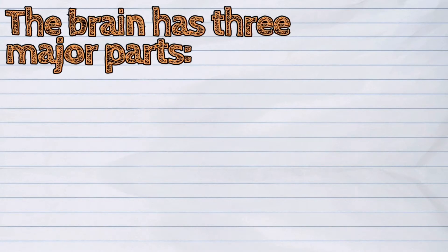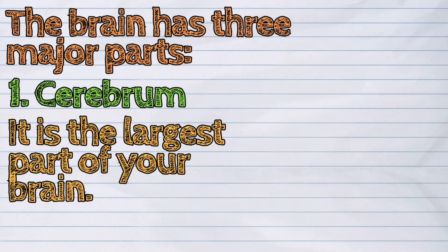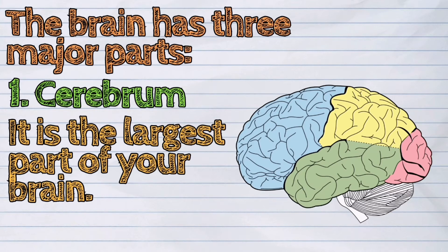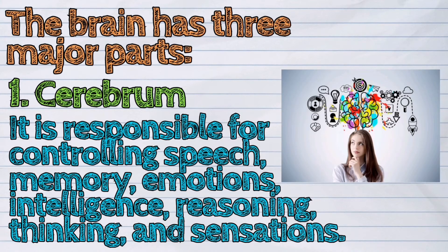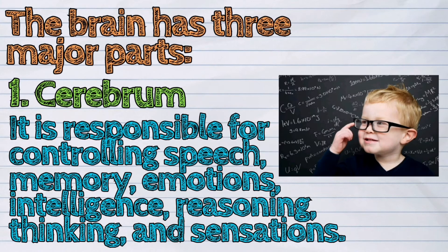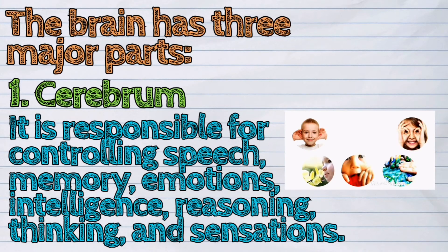The brain has three major parts. The first one is the cerebrum. It is the largest part of your brain. It is responsible for controlling speech, memory, emotions, intelligence, reasoning, thinking, and sensations.